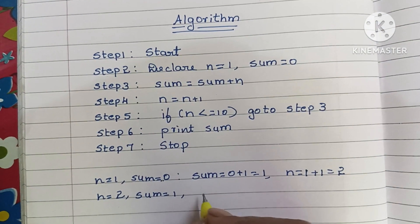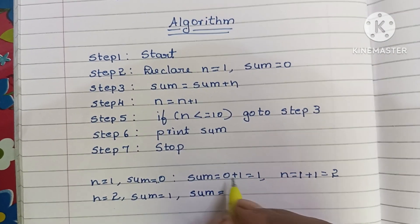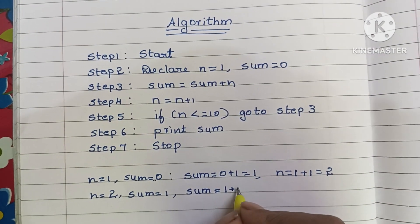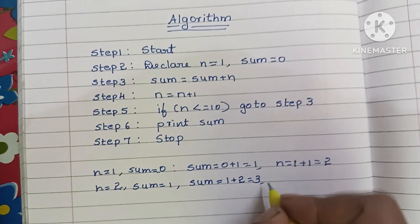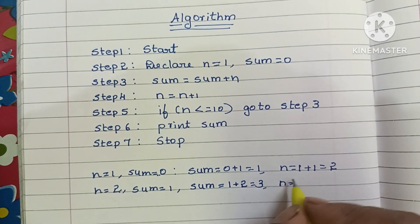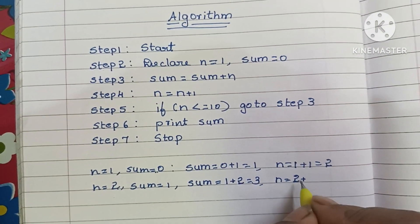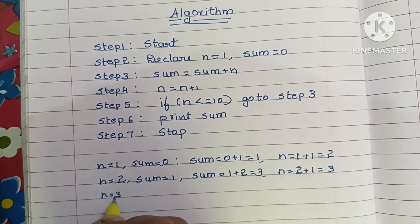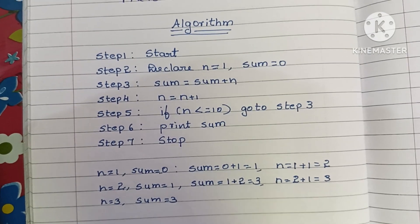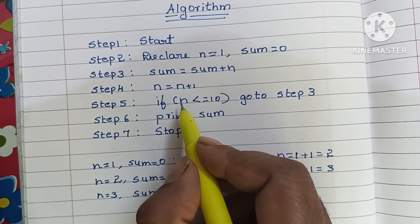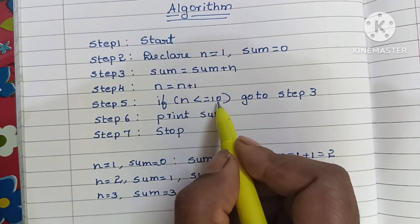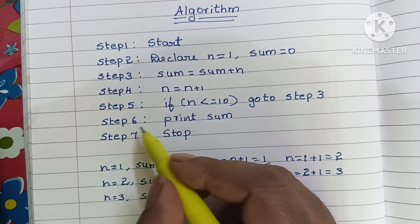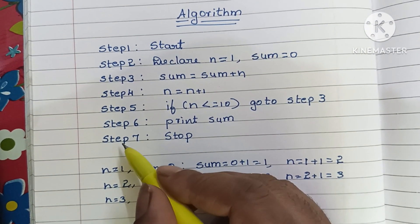We repeat: sum = sum + n, which is 1 + 2 = 3. Then n = 2 + 1 = 3. This process repeats until n becomes more than 10. When n becomes 11, it exits the loop and goes to step 6, where it prints the sum value. In step 7 it stops the algorithm.